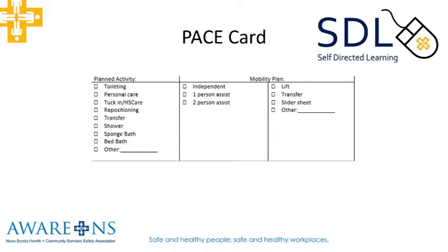For example, you're planning on giving them a shower. The next box is whether they're independent, one-person assist, or two-person assist, and this is how it's indicated in the care plan. So for this example, we'll say it's a one-person assist. If there's anything else in the care plan, such as a lift required, transfer or slider sheets, or any other equipment that may be required, you can indicate it here. For our example, we're going to say it's a shower and they're a one-person assist.